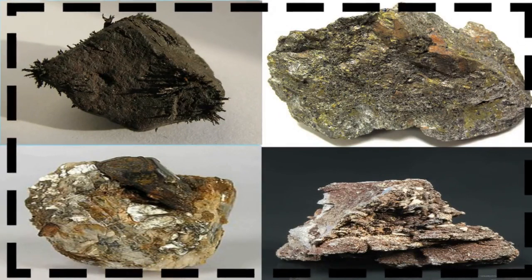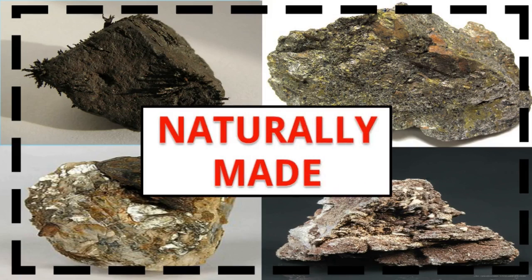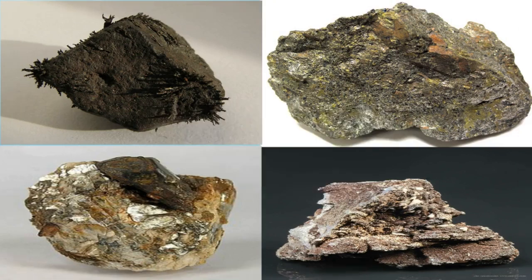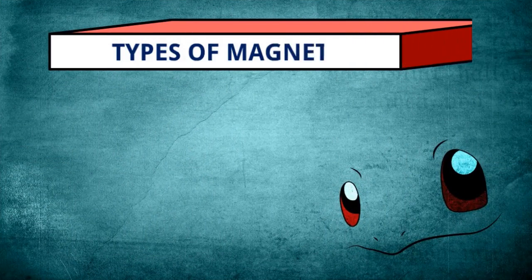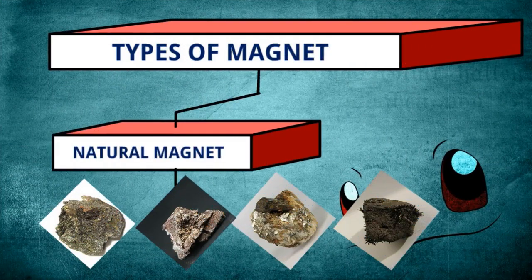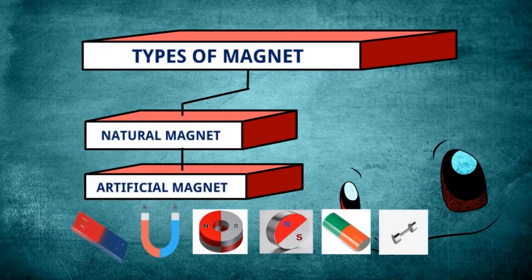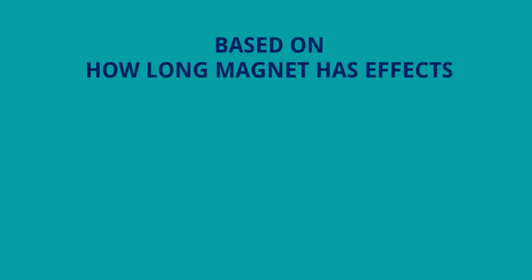And lodestone, pyrite, ferrite, and columbite — these magnets are all created by natural phenomena. Nature has created these magnets, so they are naturally made and are known as natural magnets. So magnets are classified into two categories: one is natural magnet, and another one is artificial magnet.